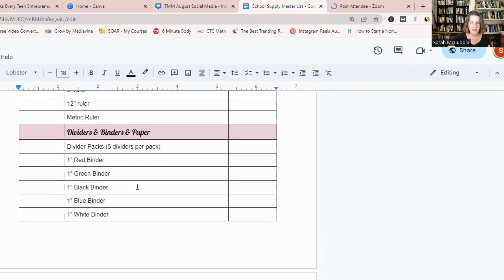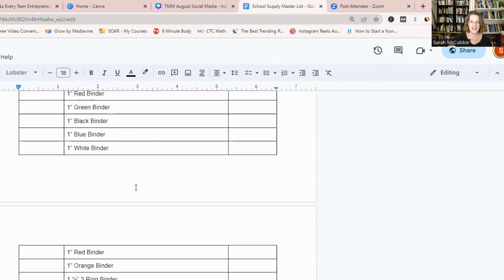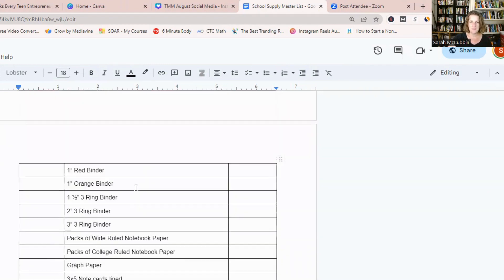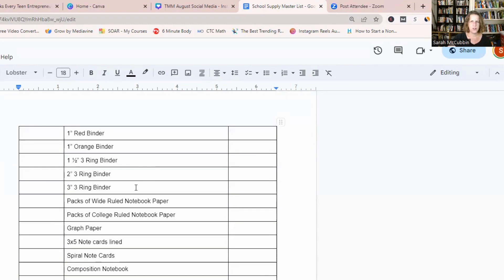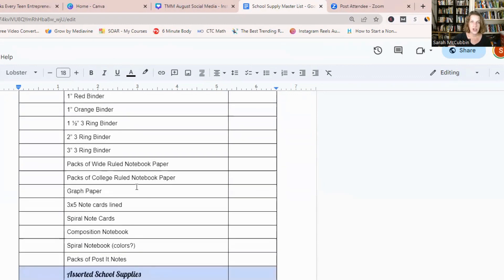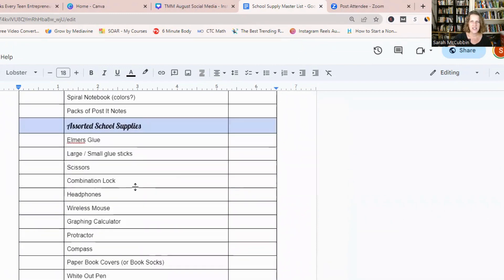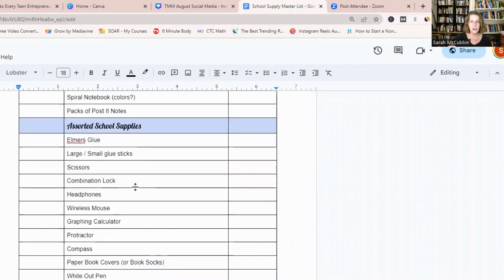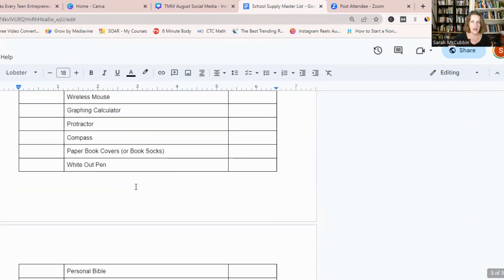And then we move on to paper and binders, the different things that teachers request. Even in college, some of this stuff ends up being requested. Note cards and composition notebooks. And then there's the assorted things, the glue. Sometimes they ask for headphones or a whiteboard.